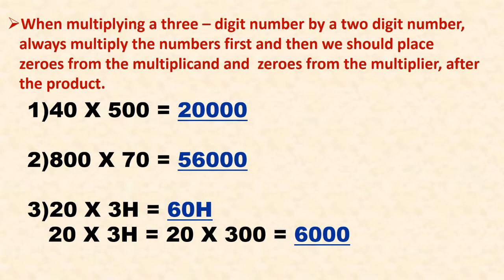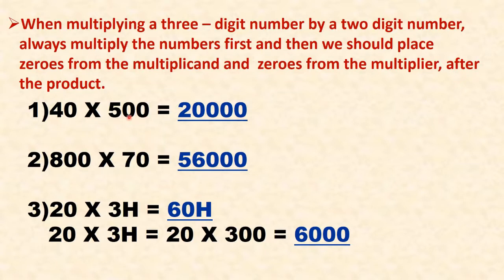When multiplying a three-digit number by a two-digit number, always multiply the numbers first, then place the zeros from the multiplicand and the zeros from the multiplier after the product. First example: 40 multiplied by 500. Multiply 4 by 5 to get 20, then place the one zero from 40 and the two zeros from 500 next to the product 20, so the answer is 20,000.